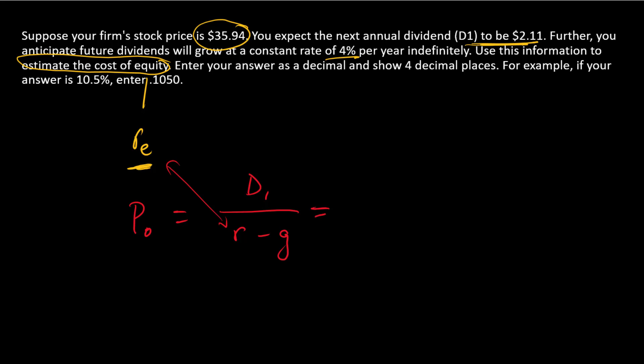And so let's start by solving this formula for R. So R, and I'll go ahead and call it RE. RE, algebraically, we can show in this formula, is equal to D over P plus G.